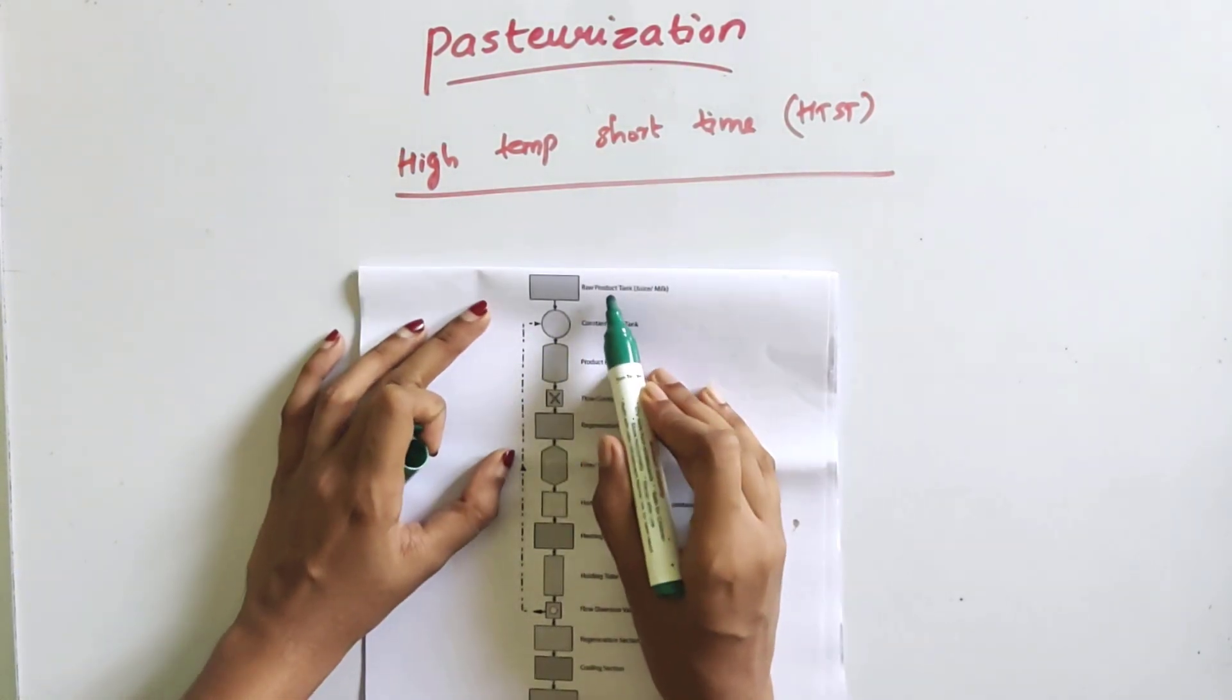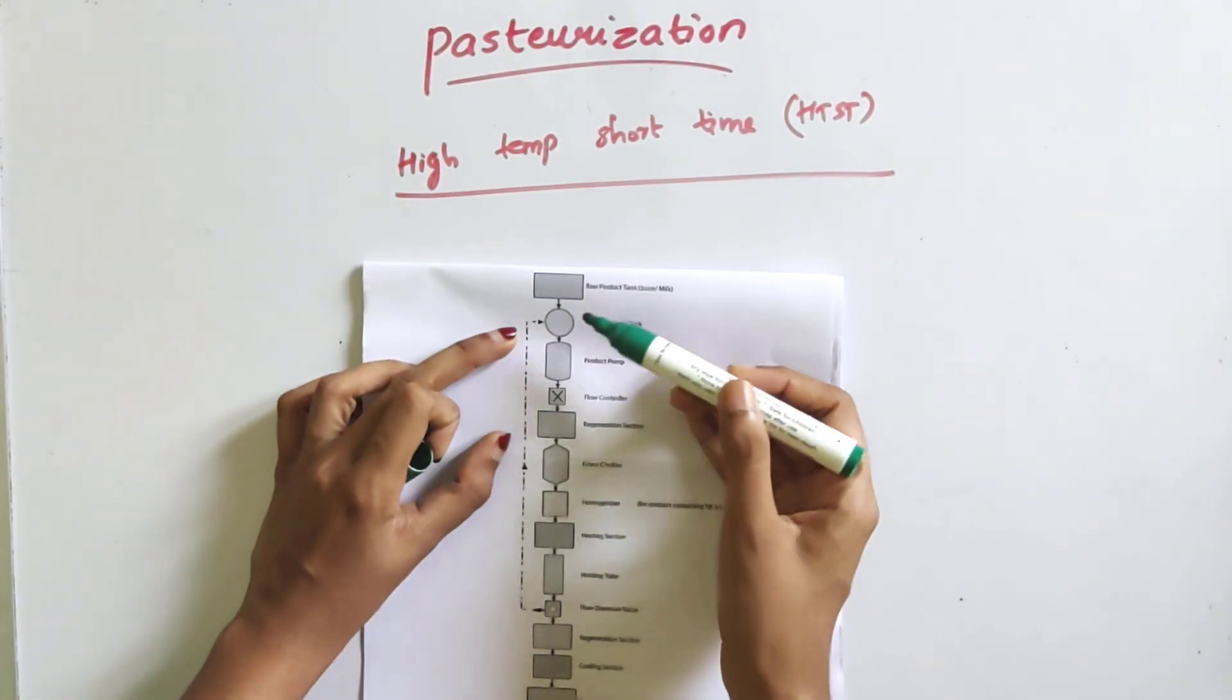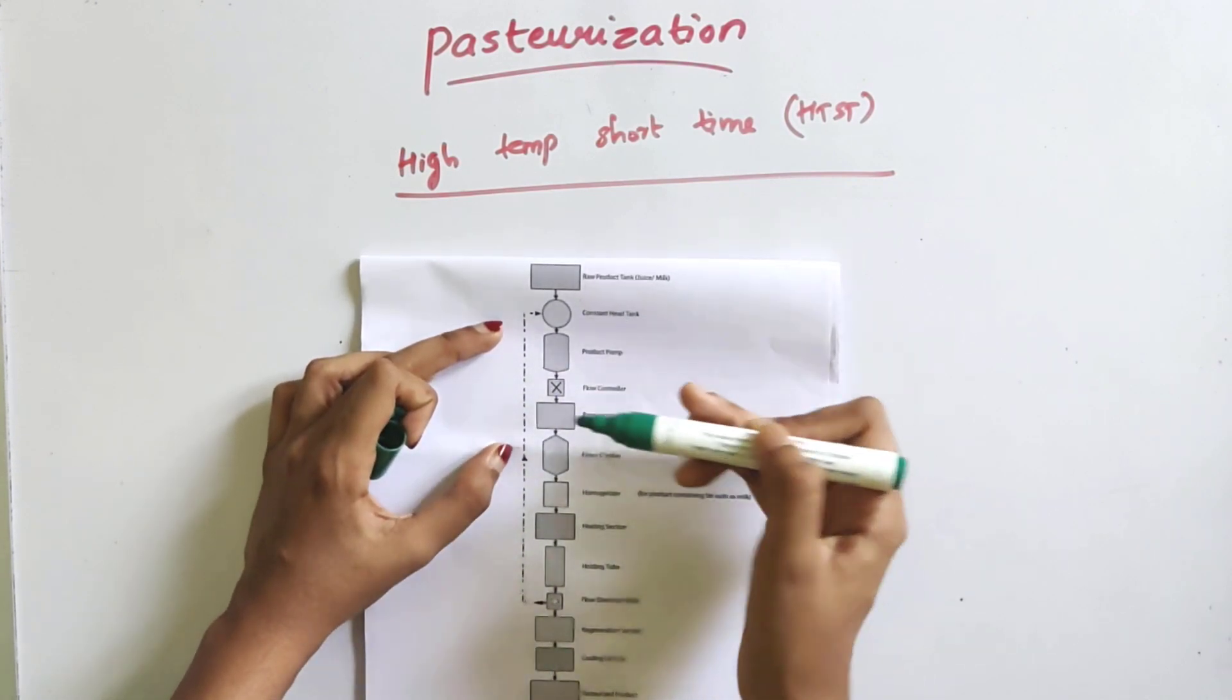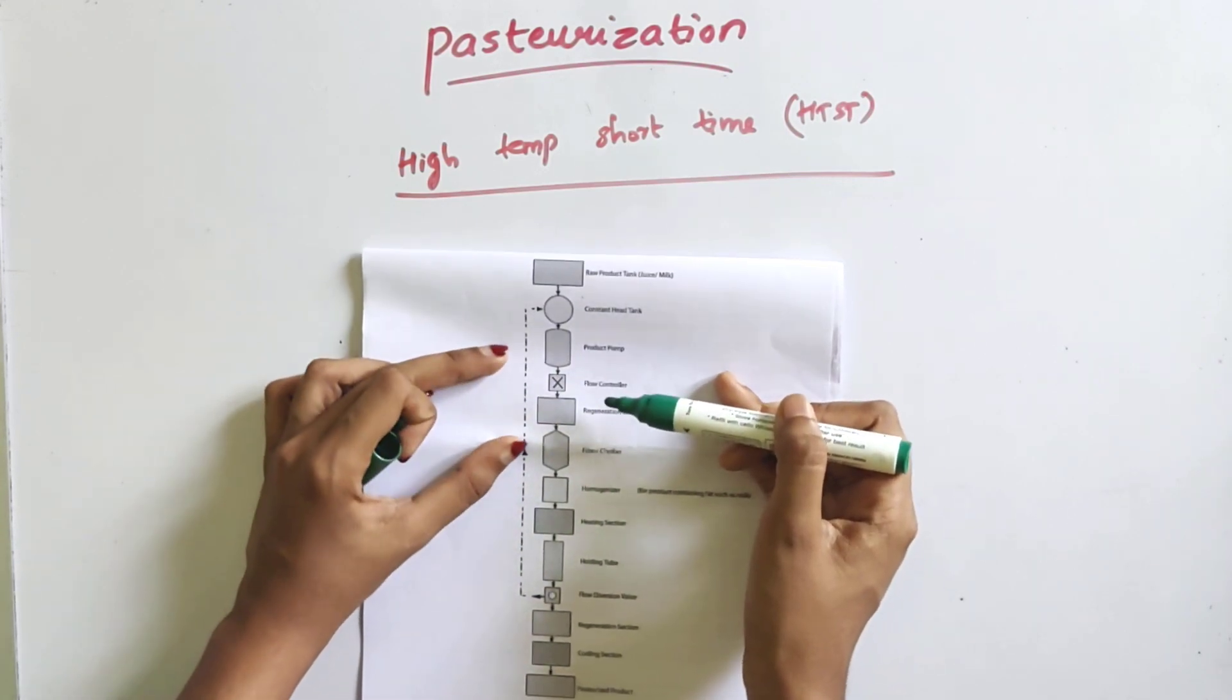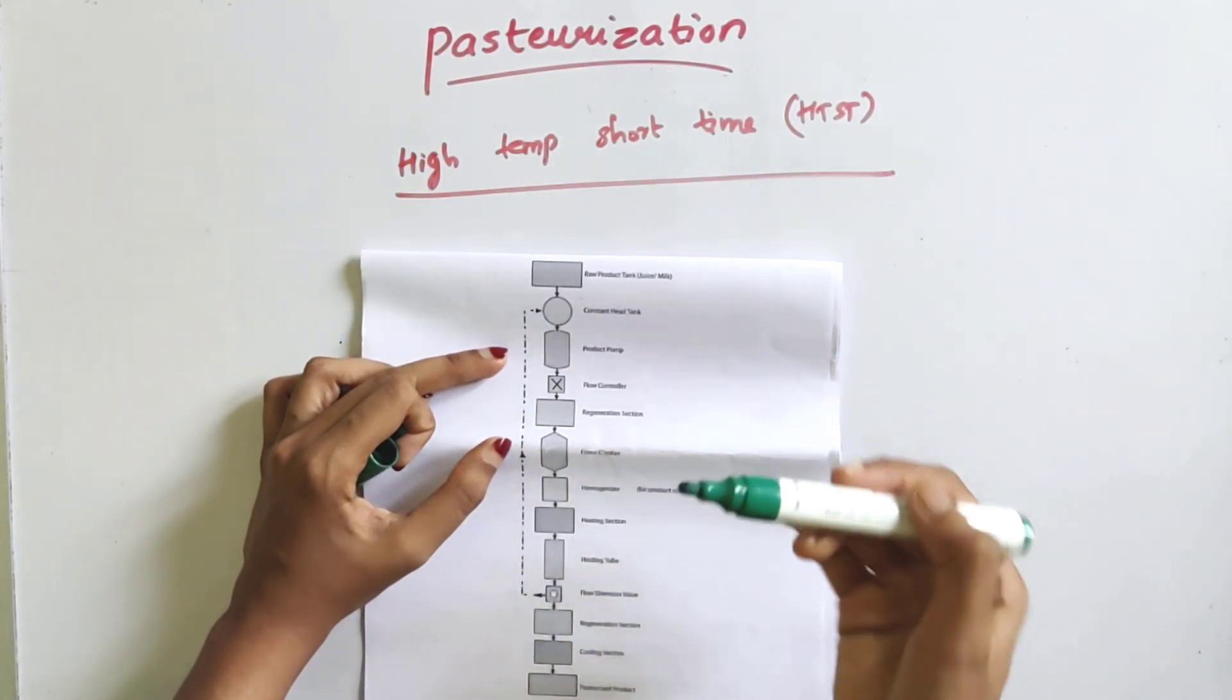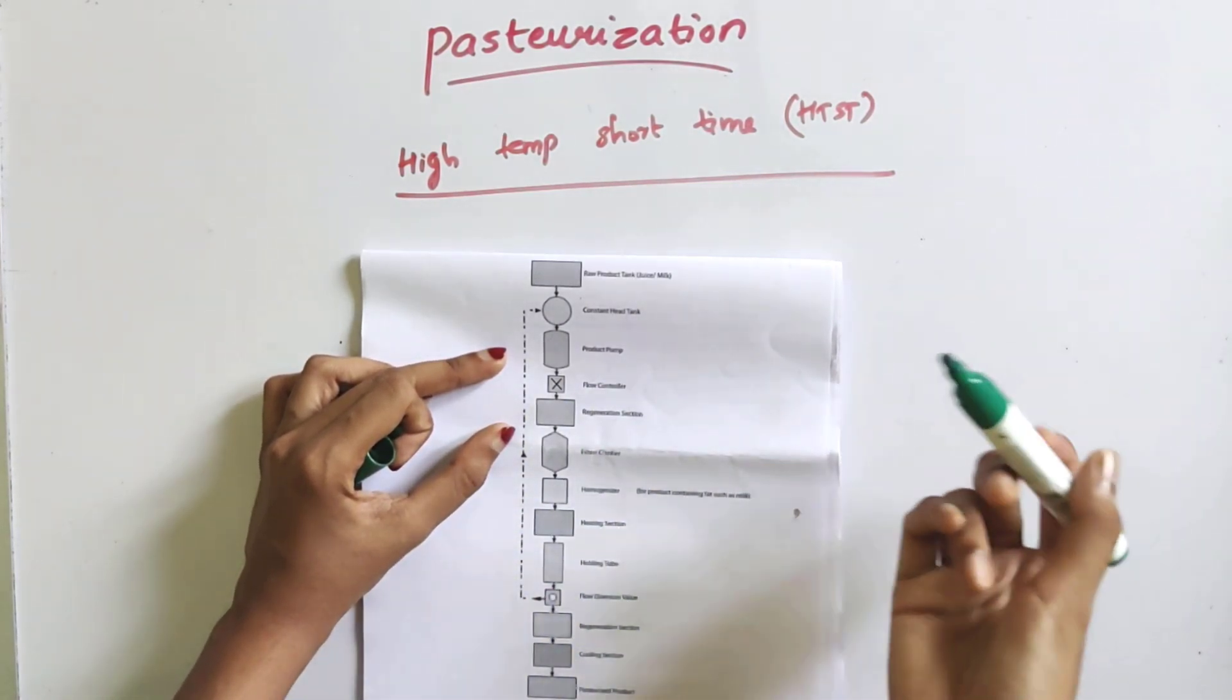First one is raw product tank. Raw product tank is one tank with a constant head tank. We have a constant head tank, then we have a pump, a product pump. The pump is used for the flow controller.